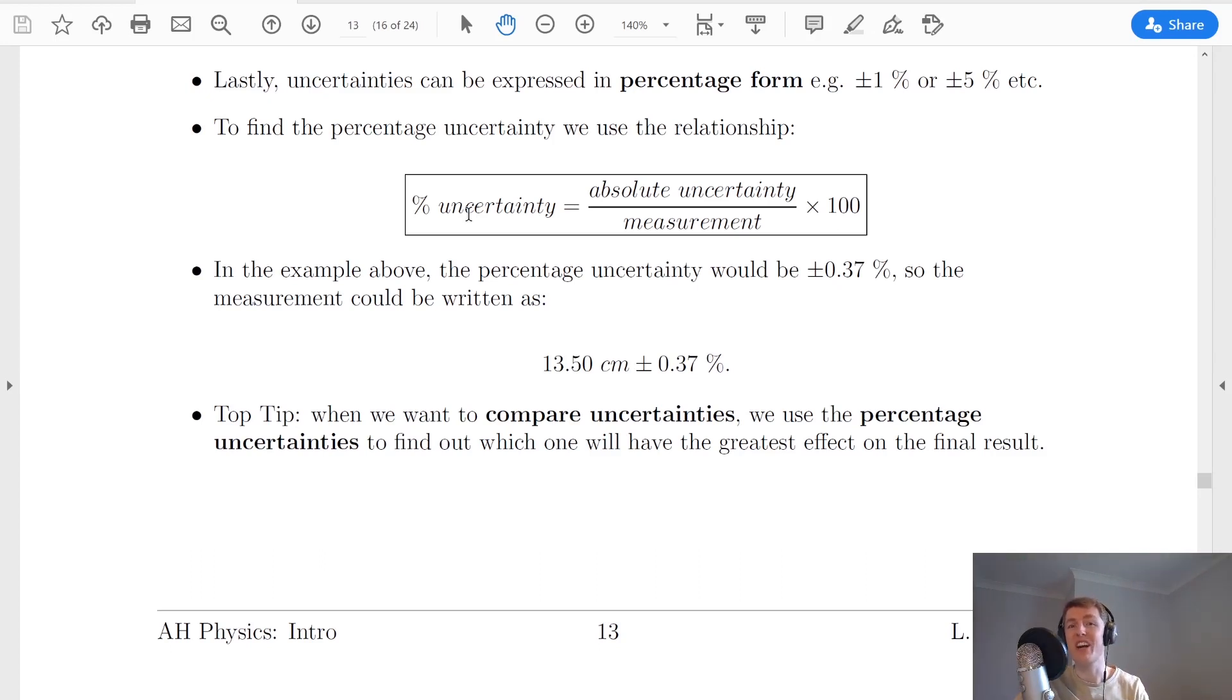The last way we can express an uncertainty is in percentage form and we saw this in the higher course as well. That means you could write down your measurement plus or minus your percentage uncertainty, like ±1% or ±5% for example.